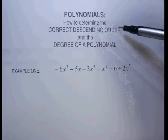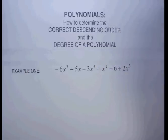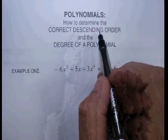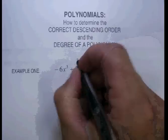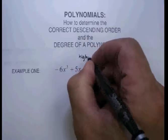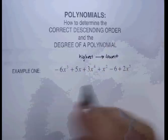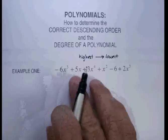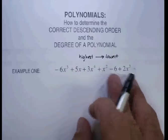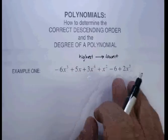But let's move to the correct descending order. Now, what does that mean? What do I do when I'm looking for a correct descending order? Well, to descend means to go from highest to lowest, doesn't it? So I'm going to look for the different terms in here that go from the highest term to the lowest term.